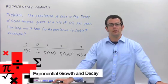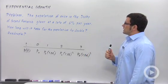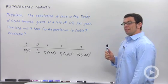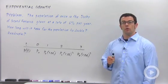I want to talk about exponential growth. I have an example here. The population of mice in the Duchy of Grand Fenwick grows at a rate of six percent per year. How long will it take for the population to double or quadruple?